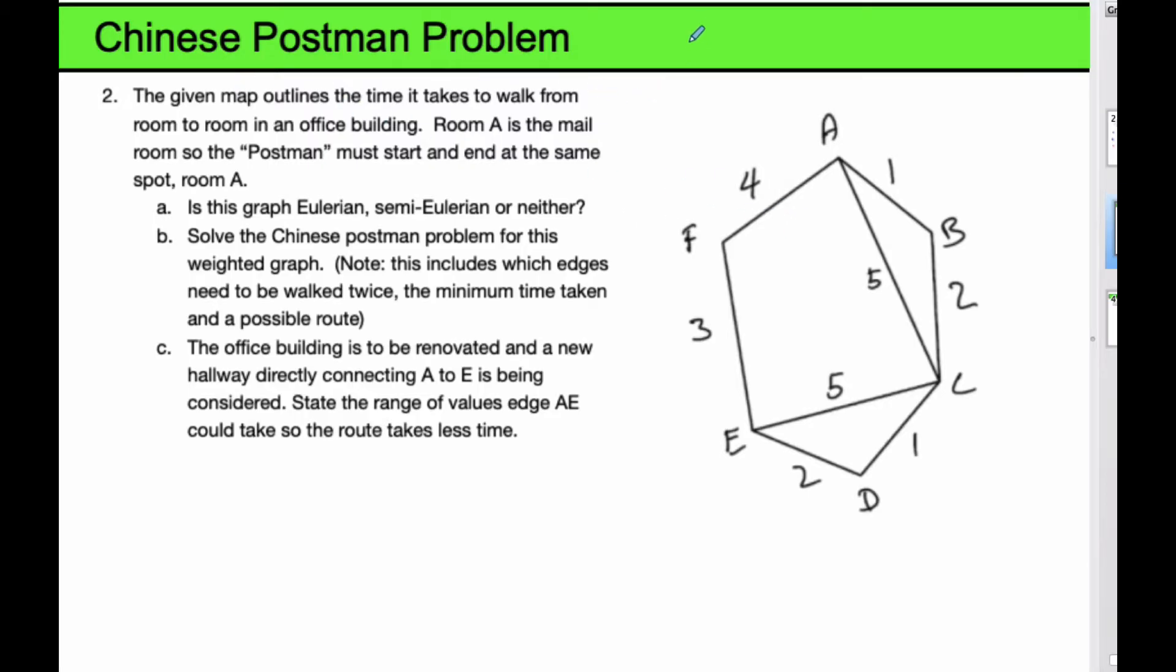Because it's Eulerian we are dealing with edges, and this is called the Chinese Postman Problem. Here in this country maybe it should be called the Czech Snowplow Problem because the snowplow has to go through every single road and they want to do it as efficiently as possible. That's the idea behind the Chinese Postman Problem.